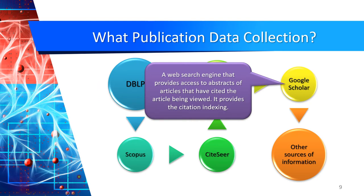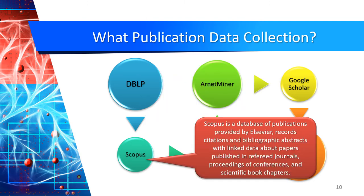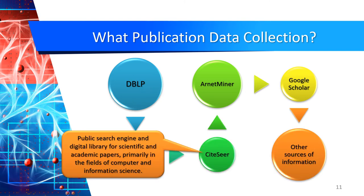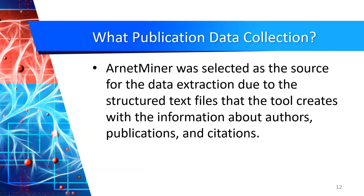Google Scholar is a web search engine that provides access to abstracts of articles and citation indexing. Also, Scopus is a database of publications that records citations and bibliographic abstracts with linked data about papers published in reference journals, conference proceedings, and scientific book chapters. There is also a public search engine and digital library for scientific and academic papers in the fields of computer and information science. In this case, we are going to use ArnetMiner because it offers structured text files that allow us to obtain information about all sorts of publications and citations.